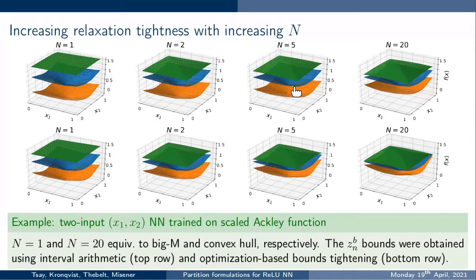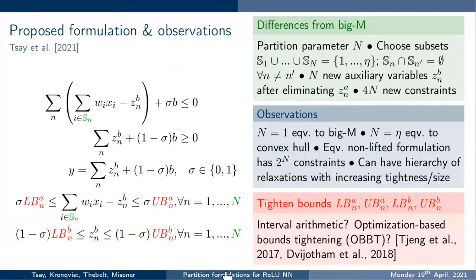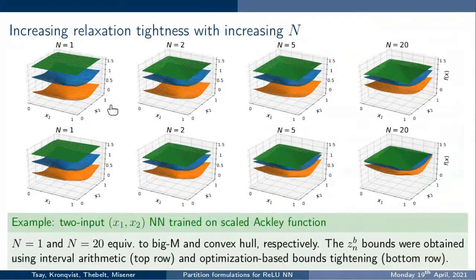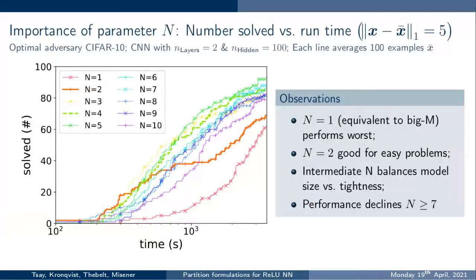Another observation: the lb and ub parameters in our formulation are analogous to Big M coefficients. We can tighten them using interval arithmetic (top picture) or optimization-based bound tightening (bottom picture). Optimization-based bound tightening is well known in the verification literature to help for N=1, and we get the exact same advantages from our formulations — going from interval arithmetic to optimization-based bound tightening is beneficial across all values of N.